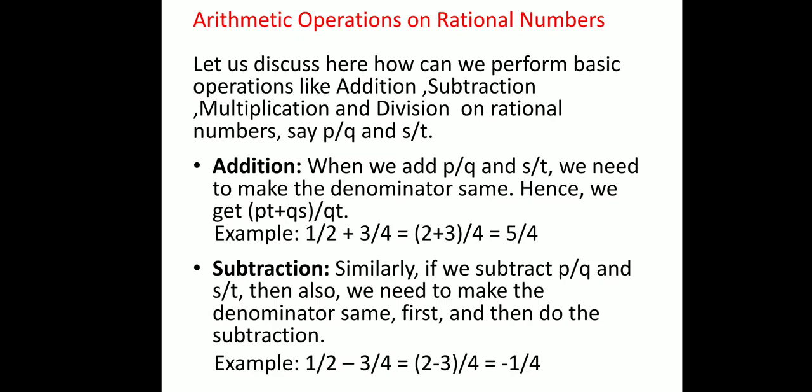Let us take an example. If one rational number is 1/2 and another is 3/4, and I need to add them, I first make their denominators the same by taking the LCM of 2 and 4, which is 4. So we get (2 + 3) / 4 = 5/4.